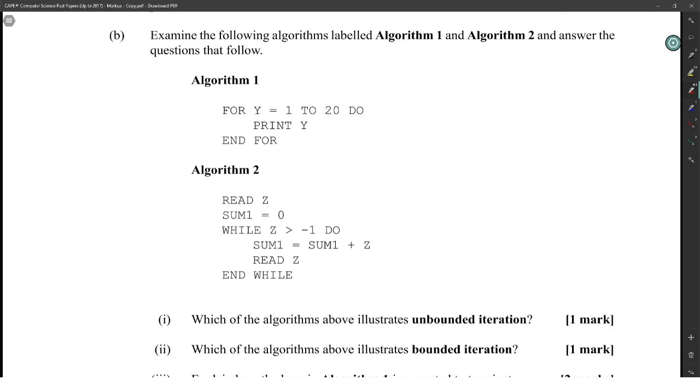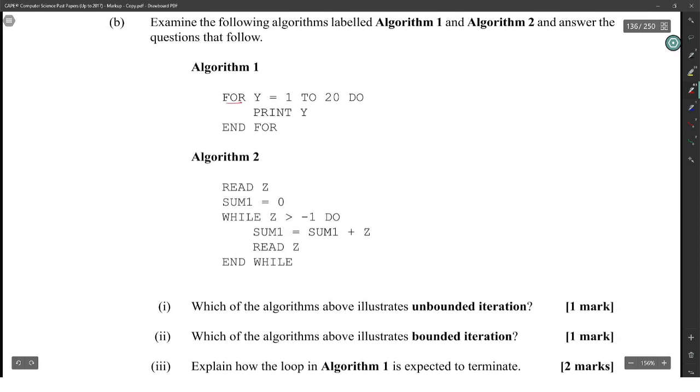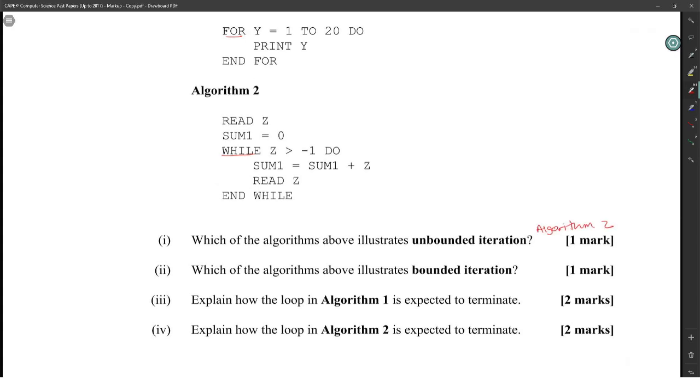Examine the following algorithms, labeled Algorithm 1 and Algorithm 2, and answer the questions that follow. So one is a for loop and one is a while loop. Which of the algorithms illustrates unbounded iteration? Algorithm 2. Which of the algorithms is bounded? Algorithm 1.